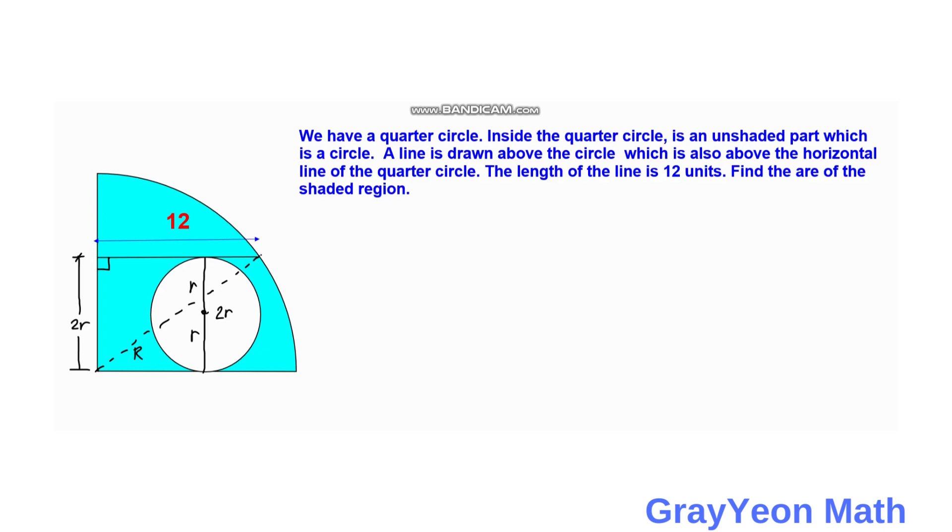Okay, so if we use the Pythagorean Theorem, we have R square as the hypotenuse equal to one leg square, which is 12 plus 2R square, the other leg.